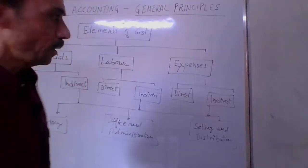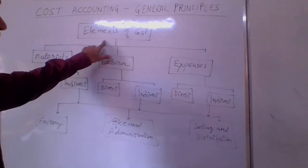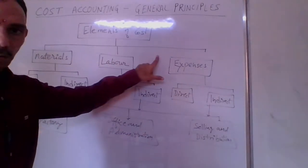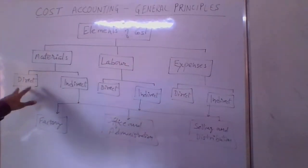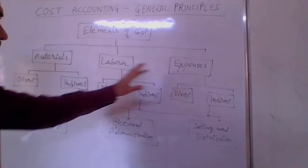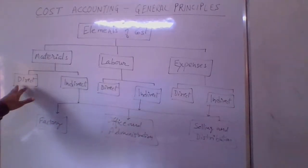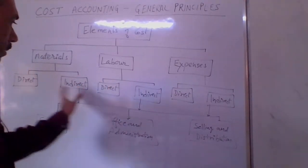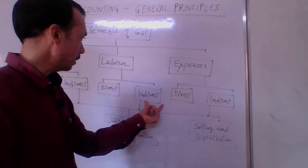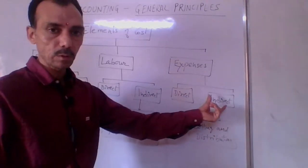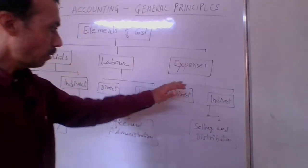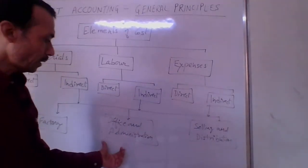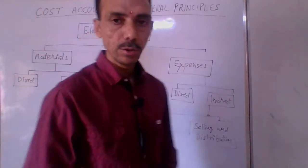To repeat: the elements of cost are three kinds — materials, labour, and expenses. Further, materials, labour, and expenses are subdivided into direct and indirect. All the indirect costs are grouped together as overheads, which are further divided into factory overheads, office and administration overheads, and selling and distribution overheads.